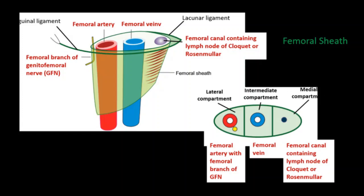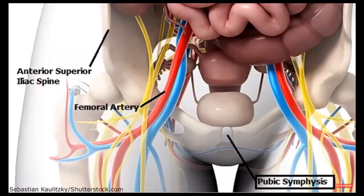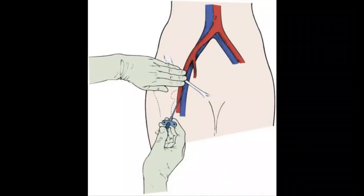Regarding the clinical relevance of the femoral triangle: to measure the femoral pulse, the femoral artery can be palpated just inferior to where it crosses the inguinal ligament. The femoral artery crosses exactly midway between the pubic symphysis and the anterior superior iliac spine. When blood reaches the lower extremity, the presence of the femoral pulse can be felt.